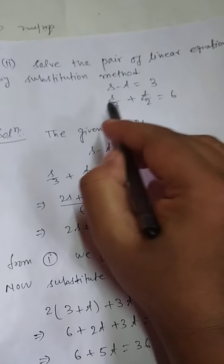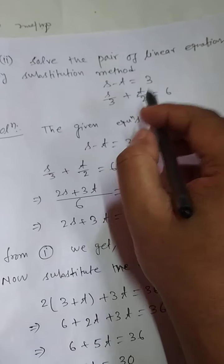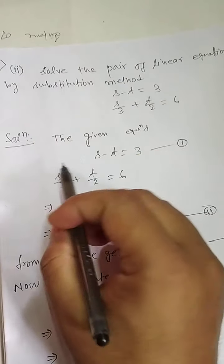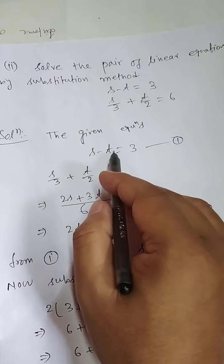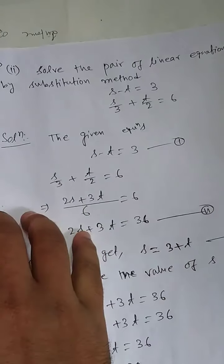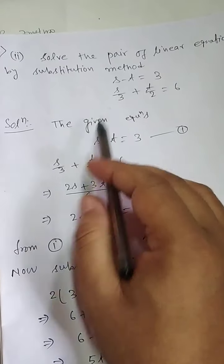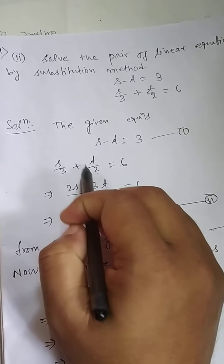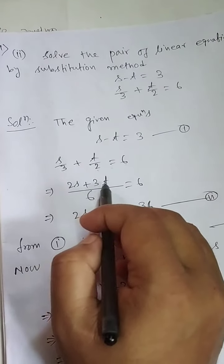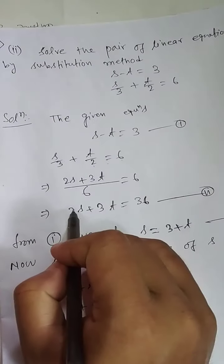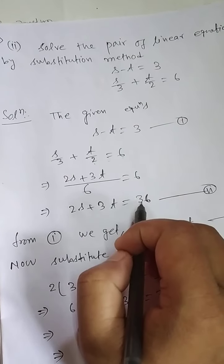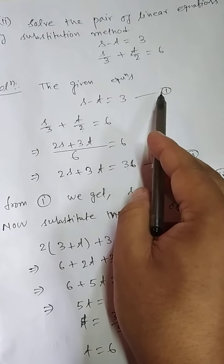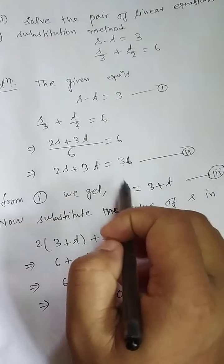The variables here are s and t. The given equations are: s minus t equals 3 — this is equation number 1 — and s by 3 plus t by 2 equals 6. Simplifying: 2s plus 3t divided by 6 equals 6, so 2s plus 3t equals 36 — this is equation number 2.